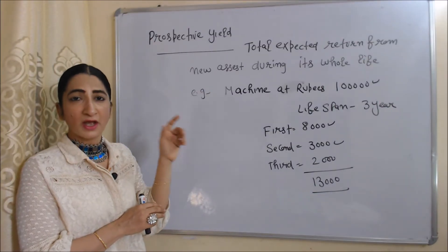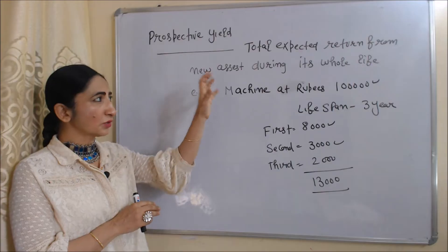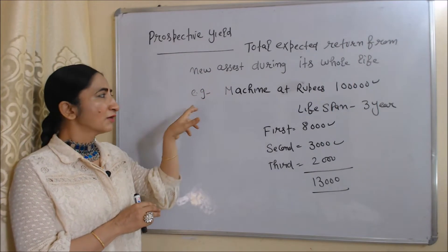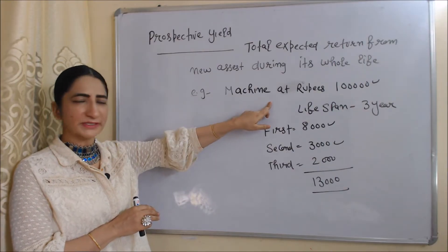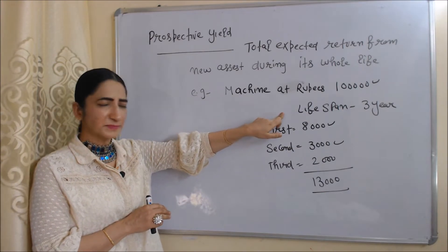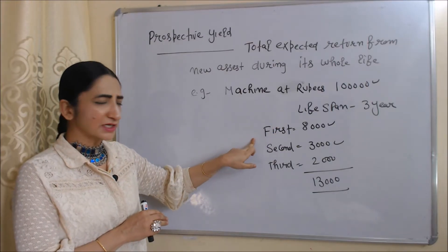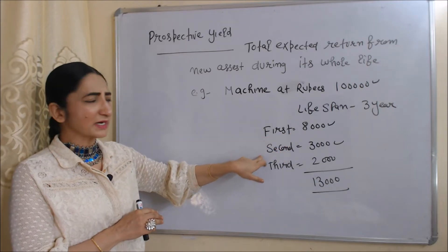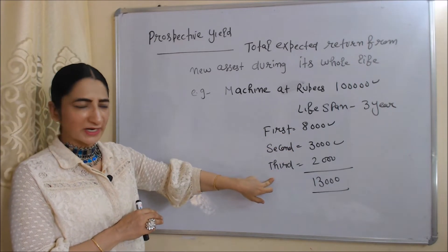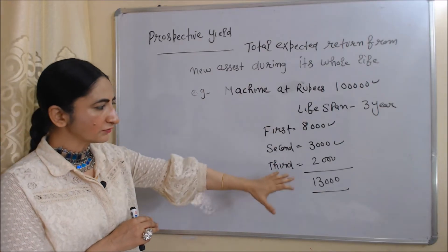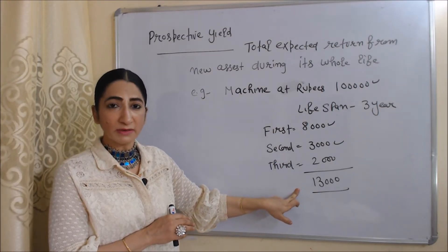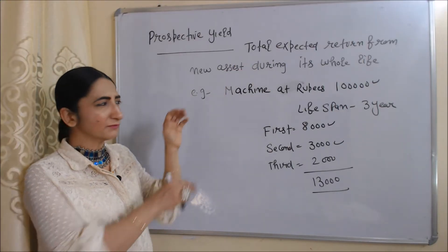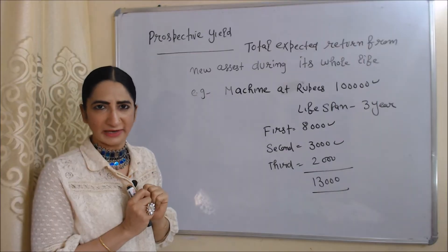First, prospective yield means total expected return from a new asset during its whole life. For example, suppose you purchased a machine at rupees 1,500,000 and the lifespan of this machine is three years. If you expect a return of 8,000 in the first year, 3,000 in the second year, and 2,000 in the third year, the total of 13,000 will be called prospective yield — because prospective yield is the total expected return from a new asset during its whole life.